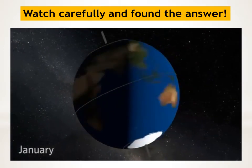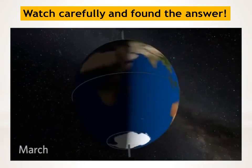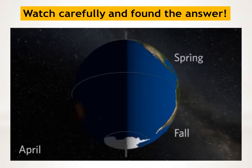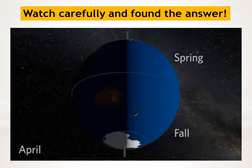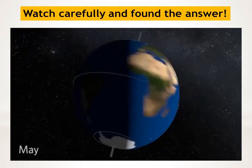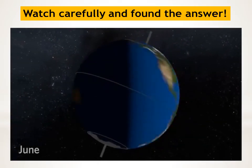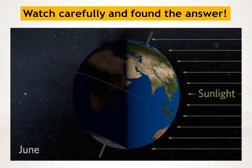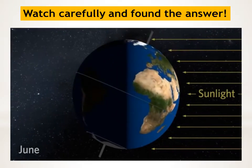As earth orbits the Sun, we move towards spring in the northern hemisphere. Now earth is tilted neither toward nor away from the Sun, and day and night are about equal in length. As we make our way to the summer months, notice that earth is still tilted in the same direction. Now on the other side of our orbit, the north pole is tipping toward the Sun, and sunlight strikes the northern hemisphere more directly, with the Sun staying in the sky for a longer time.